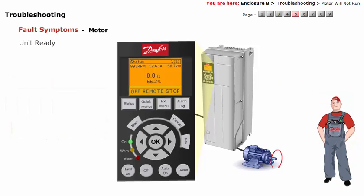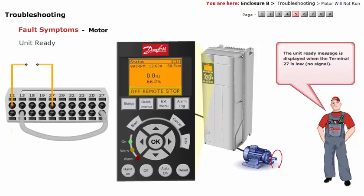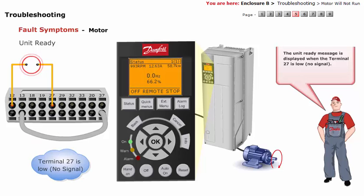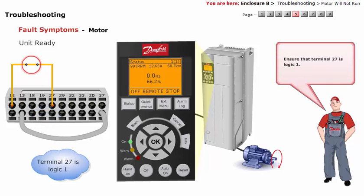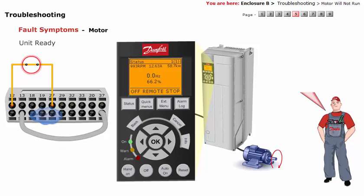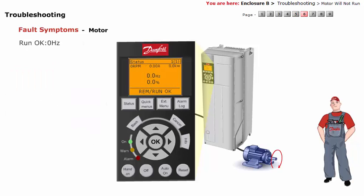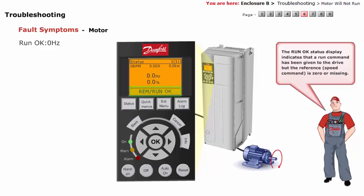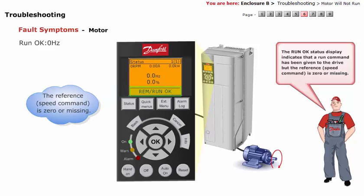Unit Ready: the unit ready message is displayed when terminal 27 is low — no signal. Ensure that terminal 27 is logic 1. Run OK, 0 Hz: the Run OK status display indicates that a run command has been given to the drive but the reference speed command is 0 or missing.